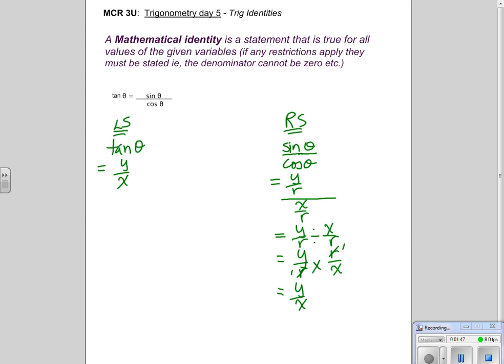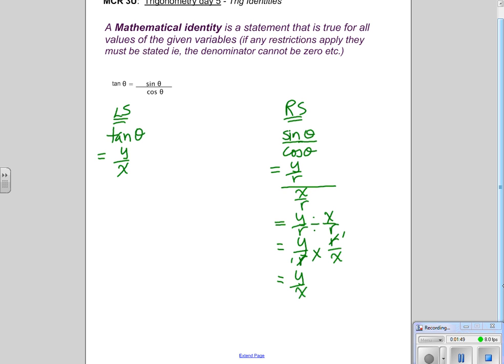It equals the left side. So the concluding statement would be, therefore, left side equals right side. Therefore, tan of theta equals sine theta over cos theta for all values of theta, unless cos theta can't be zero. So what is my restrictions on theta? Theta can't be 90 degrees or 270 degrees.